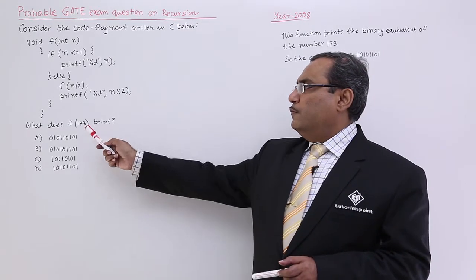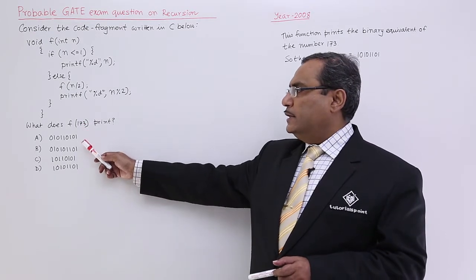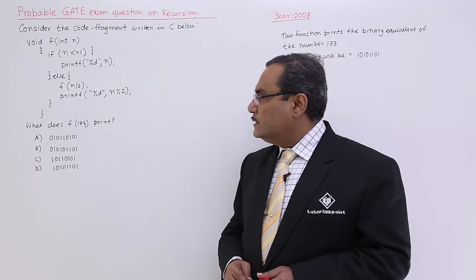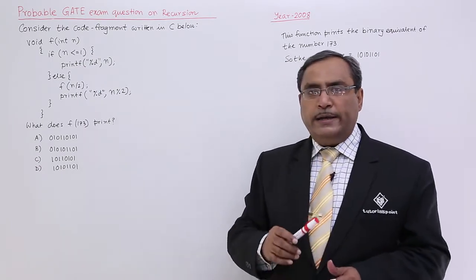That is why for 173 the respective binary I shall have to find out and that will be the answer here. So, 173 the respective binary has to be calculated.